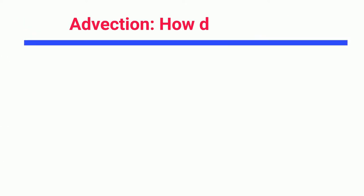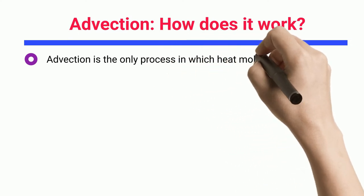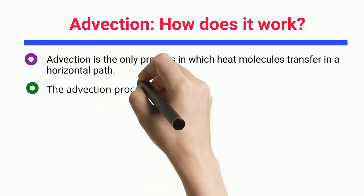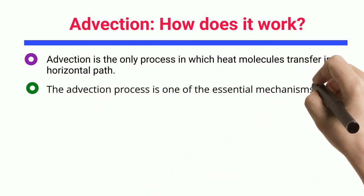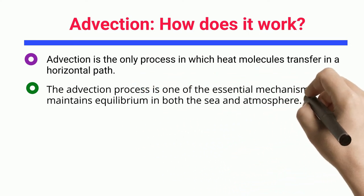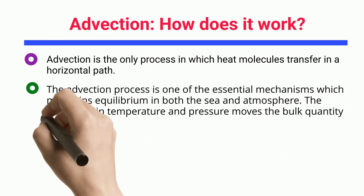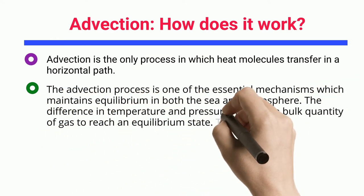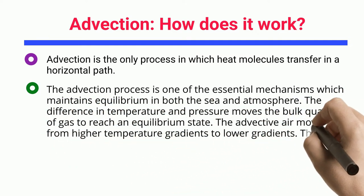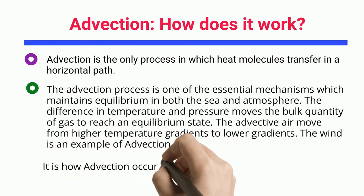Advection — How does it work? Advection is the only process in which heat molecules transfer in a horizontal path. The advection process is one of the essential mechanisms which maintains equilibrium in both the sea and atmosphere. The difference in temperature and pressure moves the bulk quantity of gas to reach an equilibrium state. The advective air moves from higher temperature gradients to lower gradients. The wind is an example of advection.